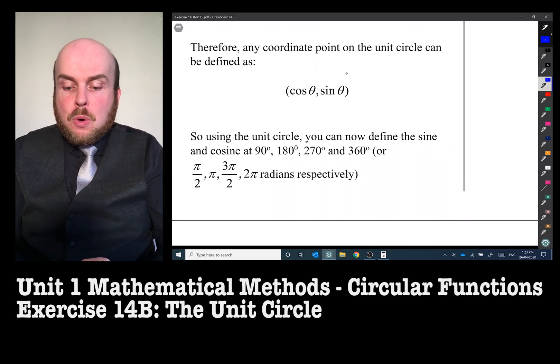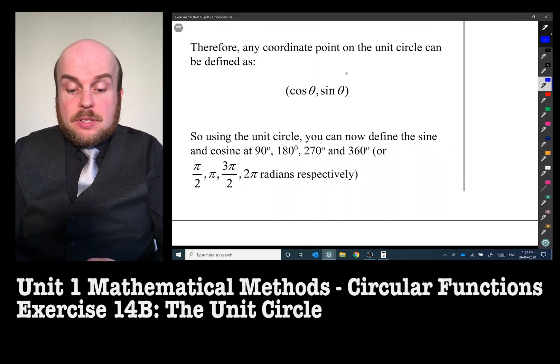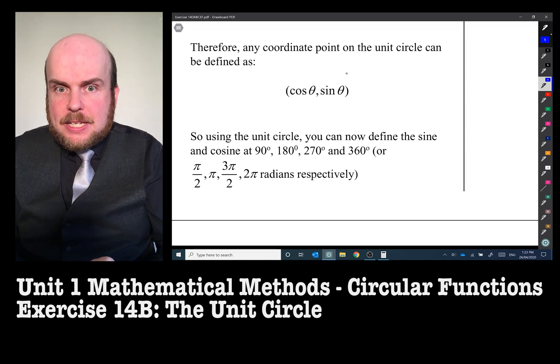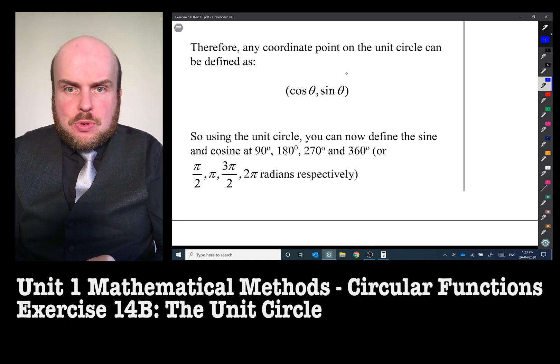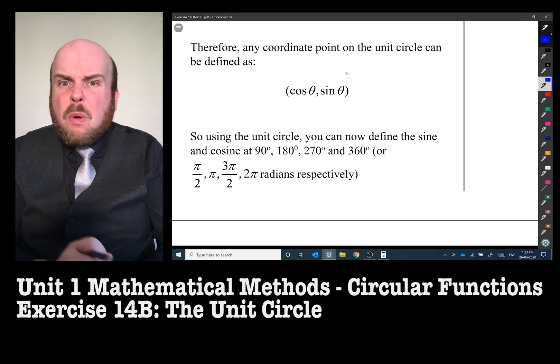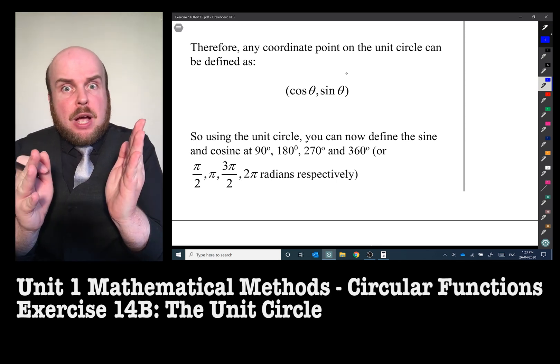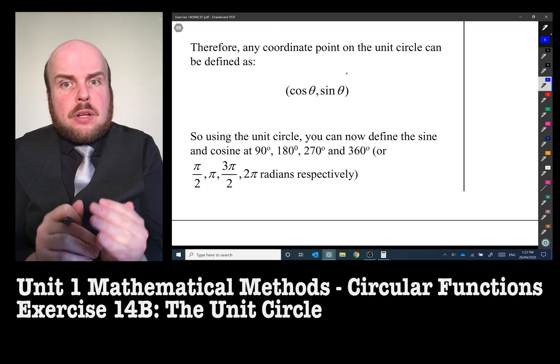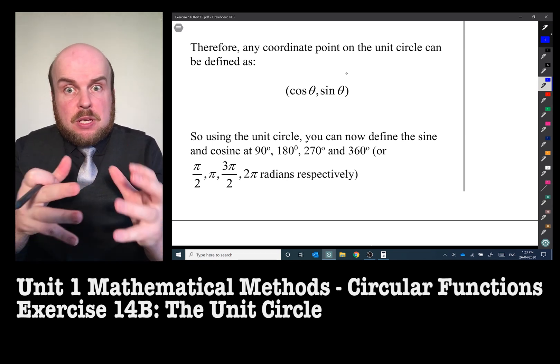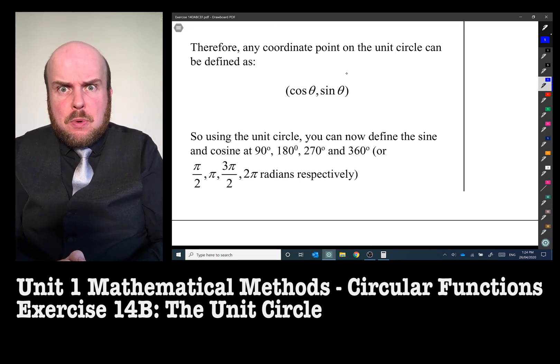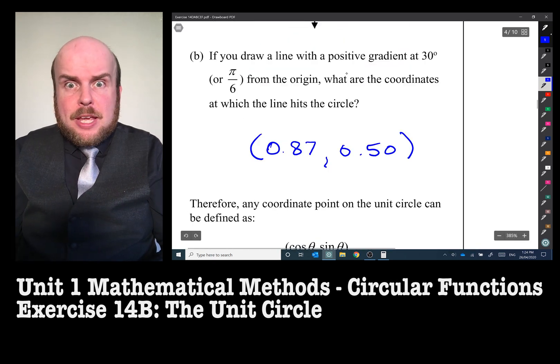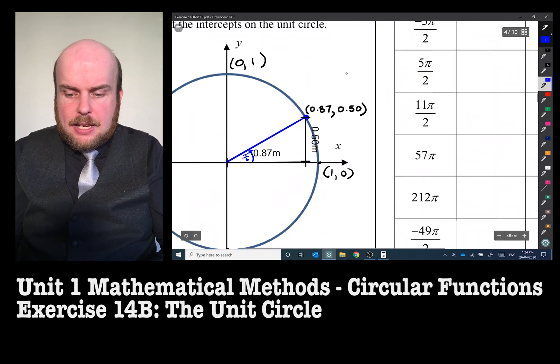Now, using the unit circle, we can now define the sine and cosine of all of the extremities. 90, 180, 270, and 360. Why is this great? Because we can't do it using a right-angle triangle. You can't make a right-angle triangle using two lots of 90 degrees, because we can't get the hypotenuse and all of that working. So we can now look at these.